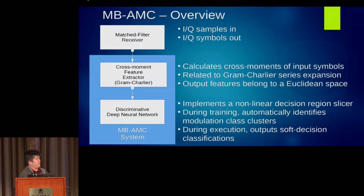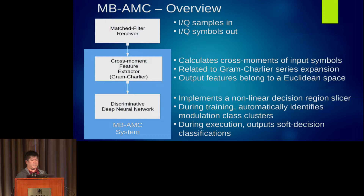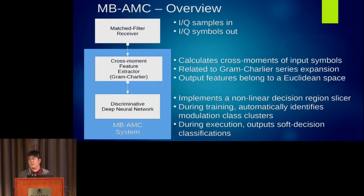Let's do a quick overview of what happened last year. Basically, we had a match-filter receiver and took the output of that — time-synchronized, frequency-synchronized, and probably phase-synchronized symbols coming out of this magic black-box receiver. The modulation recognition system basically took the moments of this: expected value of the symbol, symbol squared, symbol times the complex conjugate, those kinds of things. We related it to all the math-y stuff.